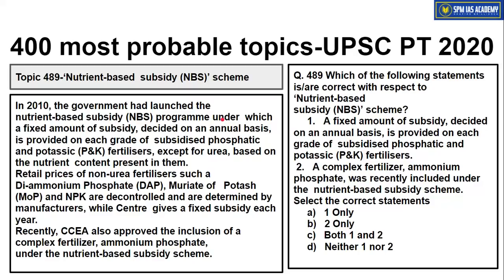Topic 489 is about the Nutrient-Based Subsidy (NBS) Scheme. In 2010, the government launched this scheme under which a fixed amount of subsidy — decided on an annual basis — is provided on each grade of subsidized phosphatic and potassic fertilizers, except urea, based on the nutrient content present in them. Retail prices for non-urea fertilizers such as diammonium phosphate (DAP), muriate of potash (MOP), and NPK are decontrolled and determined by manufacturers, while the center gives a fixed subsidy each year. Recently, the Cabinet Committee on Economic Affairs approved inclusion of complex fertilizers like ammonium phosphate under the NBS scheme.